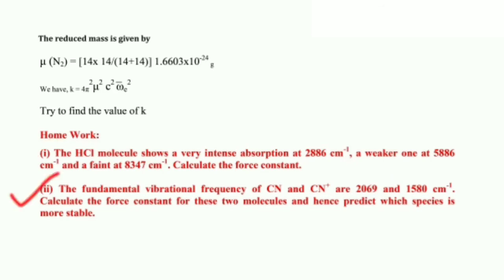For homework problem two: the fundamental vibrational frequencies of CN and CN⁺ are 2069 and 1580 cm⁻¹. Calculate the force constant for both molecules and hence predict which species is more stable. Find the reduced mass mu for each, then use the force constant relation. The species with the higher value of k will be more stable.